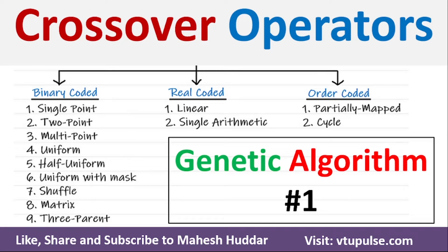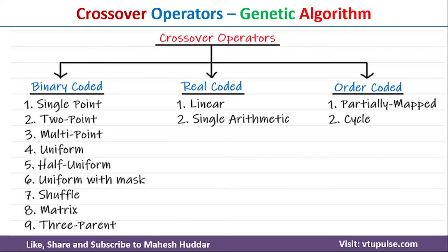Hi, welcome back. In the previous video I discussed how genetic algorithm works with a simple example. In this video I will discuss different crossover operators in genetic algorithm with simple examples. The crossover operators in genetic algorithms are divided into three groups: first, binary coded crossover operators; second, real coded crossover operators; and third, order coded crossover operators. Each of these methods will be discussed in detail one by one.